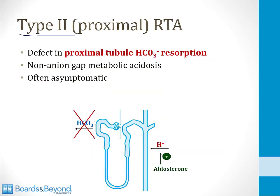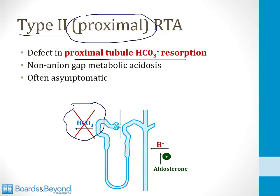Let's start by talking about type 2 renal tubular acidosis, also called a proximal renal tubular acidosis. It gets its name because the primary problem in the nephron in a type 2 RTA is a defect in the proximal tubular bicarbonate reabsorption, as I've indicated at the bottom of the screen. This leads to the loss of bicarbonate in the urine, and therefore it causes a non-anion gap metabolic acidosis, just like all RTAs. The key thing to know about proximal RTAs is that they're relatively mild and often asymptomatic, because the distal nephron can still secrete acid, which makes up for a lot of the problem of losing bicarbonate in the urine.